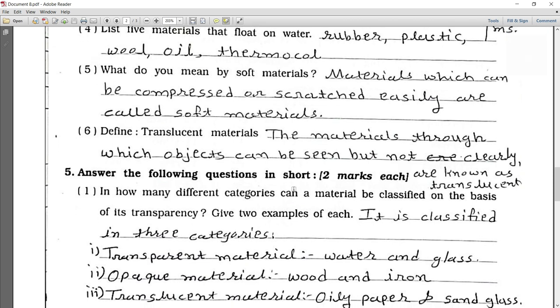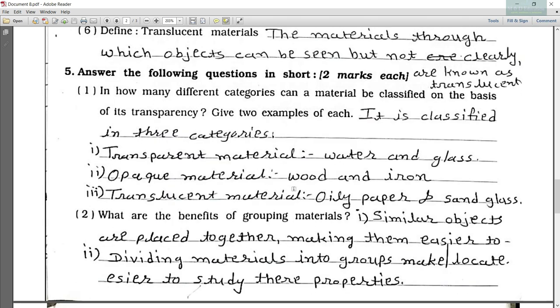Now the fifth question, two marks questions. In how many different categories can a material be classified on the basis of its transparency? Give two examples of each. So it is classified in three categories. The first one is transparent material, water and glass.